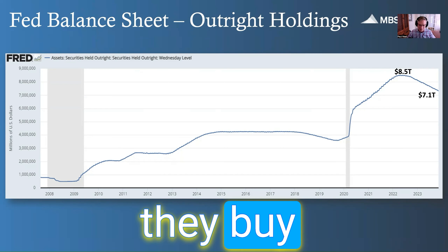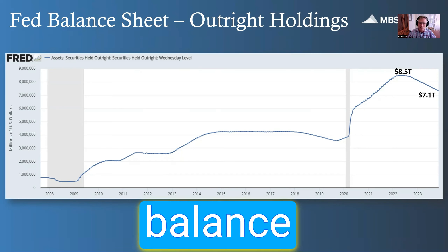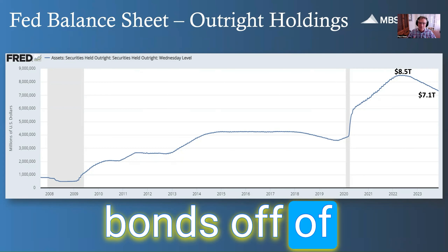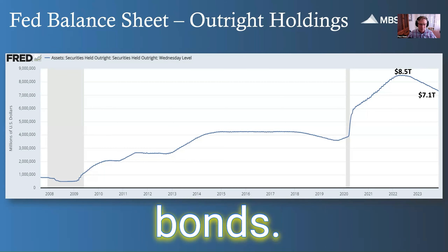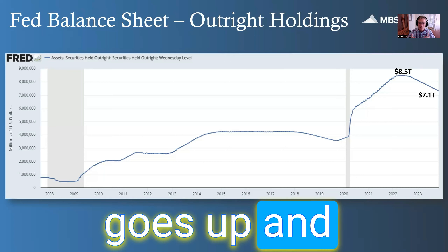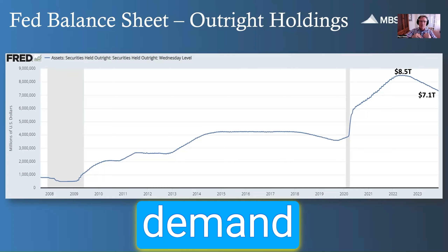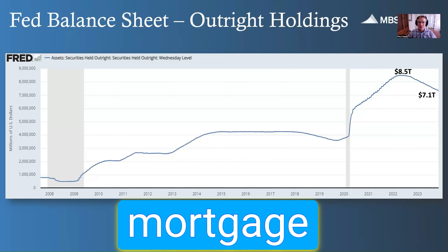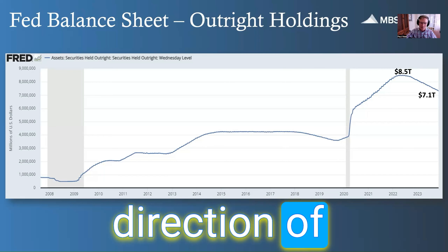The Fed buys bonds and mortgage-backed securities and holds them on their balance sheet. When they do that, they're basically taking these bonds off the market, reducing the supply. When you reduce supply, demand goes up and prices go up — limited supply, more demand, prices go up. The way bonds and mortgage-backed securities work is that yields move in the opposite direction of the price.